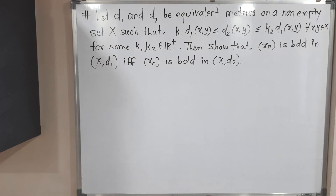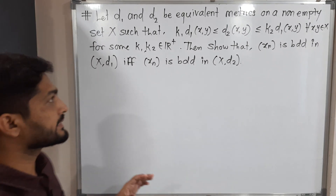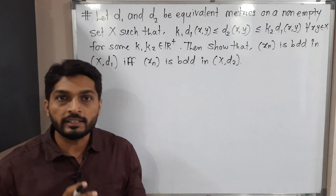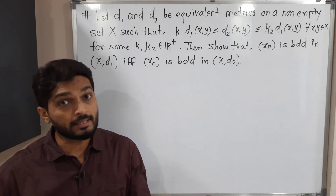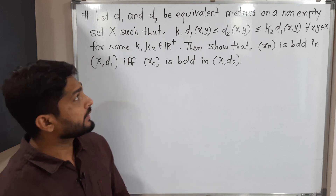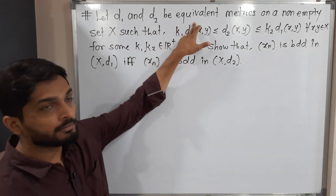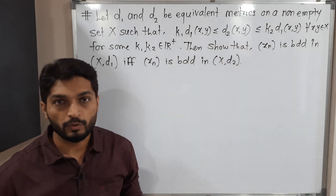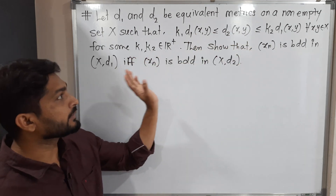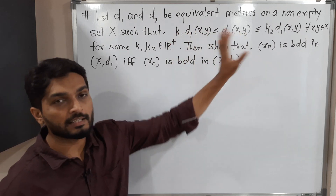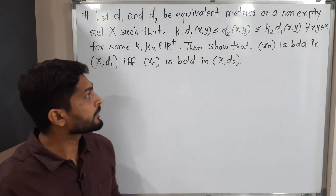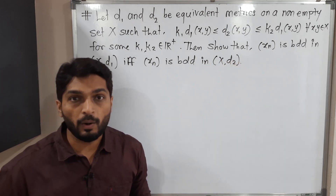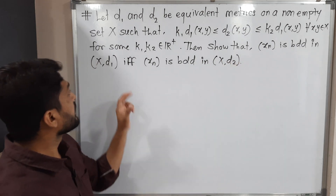In this video we are going to discuss this example. We have two metrics d1 and d2, both defined on the same space X. These two metrics are equivalent and they satisfy this inequality, where k1 and k2 are positive real numbers. We have to prove that these two statements are equivalent: the sequence xn is bounded in (X, d1) if and only if the same sequence is bounded in (X, d2).